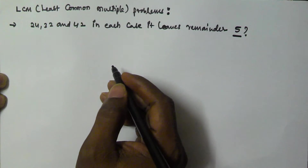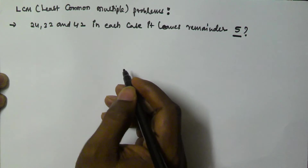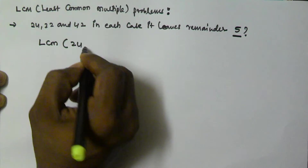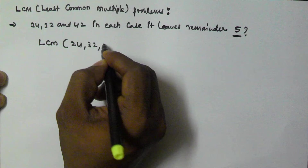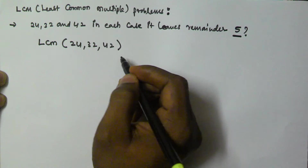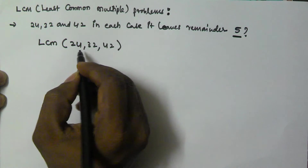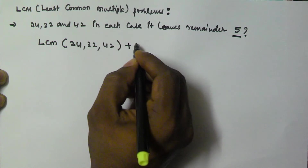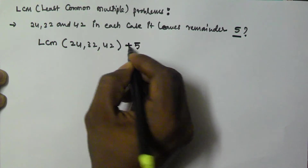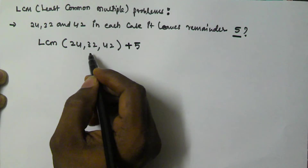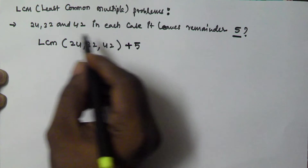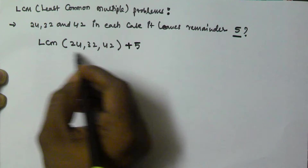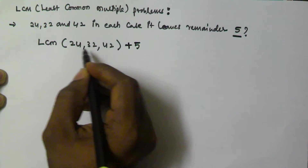Whenever we have to find the least possible number, that number is going to be the LCM of 24, 32, and 42. But since dividing by 24, 32, and 42 gives a remainder of 5, we have to add plus 5 to whatever LCM we get. So our least possible number is LCM(24, 32, 42) + 5.